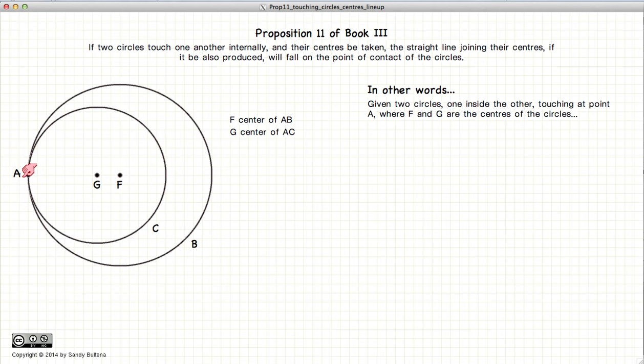In other words, it will cross through point A. So we connect G and F, draw the line further out, and it connects at point A. We're going to demonstrate that this must be true by assuming that it's not and deriving a contradiction.